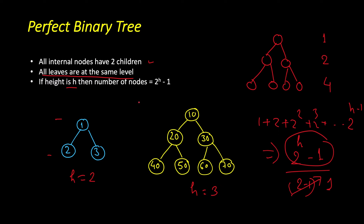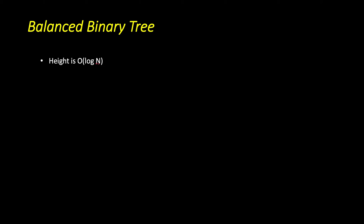This is the best-case scenario for a binary tree. If it's a perfect binary tree and the nodes are ordered, then the search time becomes perfectly logarithmic. Next is balanced binary tree. The definition of a balanced binary tree is that the height should be of the order of log n — not exactly log n but order of log n. There are many examples of balanced binary trees, for example AVL tree and red-black tree. We also have two-four tree but those are not binary.